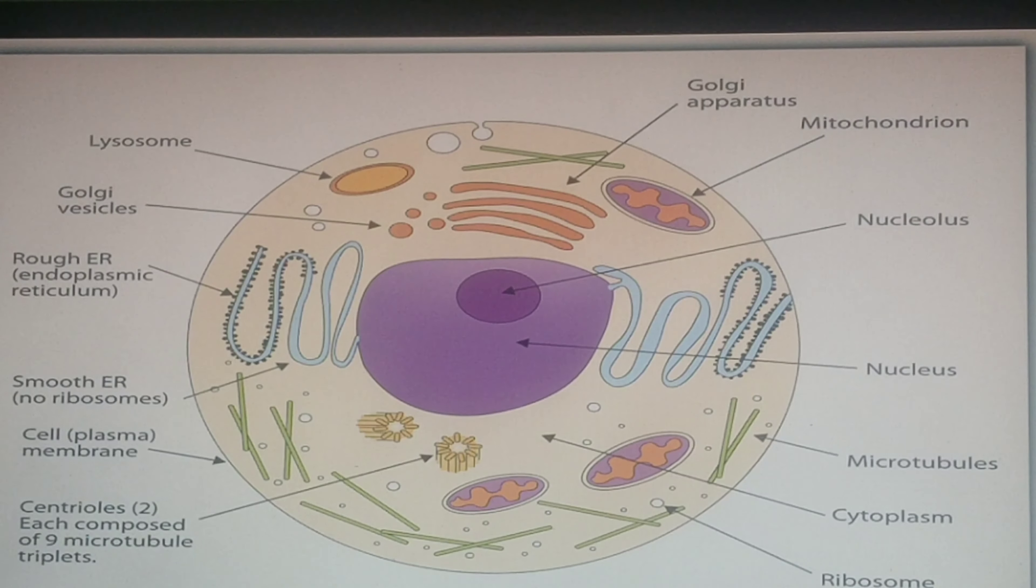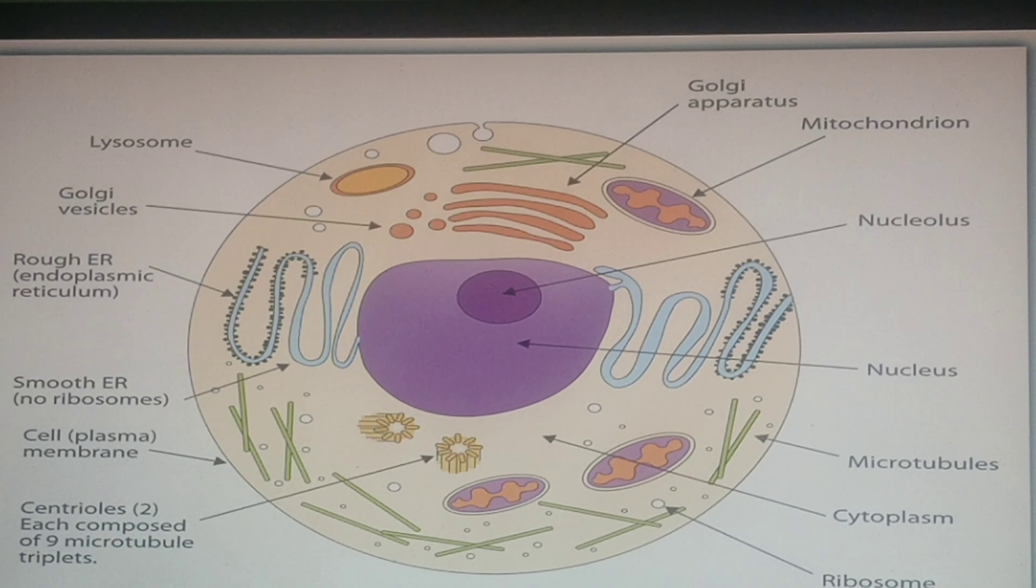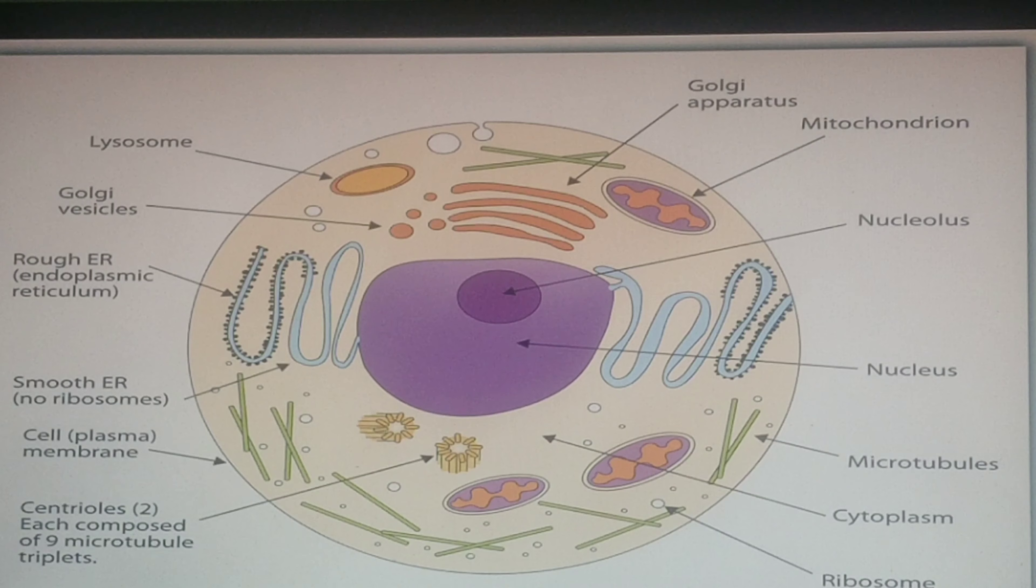let us see the parts of the animal cell. The parts of the animal cell are the cell membrane, the nucleus and the cytoplasm. There are more parts but these are the basic parts which is enough for us to understand and to know what it is.